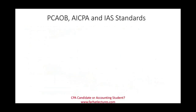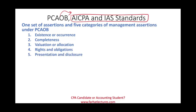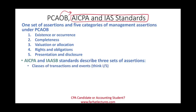We have the PCAOB, AICPA, and International Auditing Standards — three sets of rules. The AICPA and the International Auditing Standard are basically the same, and the PCAOB and AICPA are very similar. The PCAOB has one set of assertions with five categories: existence or occurrence, completeness, valuation or allocation, rights and obligation, and presentation and disclosure. The AICPA and International Auditing Standard describe three sets: classes of transactions and events, account balances, and presentation and disclosure.